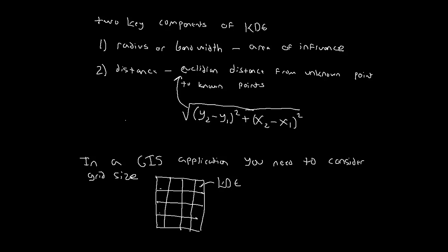It's going to calculate KDE for the center of this raster cell relative to whatever data you have. It's going to calculate the KDE for the center of this raster cell, for the center of this raster cell. So when you're doing this inside of a GIS application, you really need to consider how big do I want these cells to be? How far apart do I want these points to be? Grid size: how far apart do I want my estimates to be?